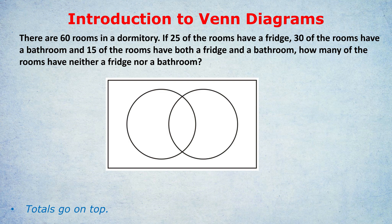Let's look at our first question. There are 60 rooms in a dormitory. 25 of the rooms have a fridge, 30 of the rooms have a bathroom, and 15 of the rooms have both a fridge and a bathroom. That word 'both' is the giveaway for a Venn diagram — we also have an overlapping category: fridge and bathroom.